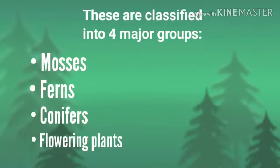The plant kingdom is classified into four major groups: mosses, ferns, conifers, and flowering plants.